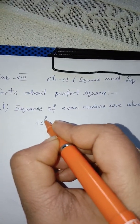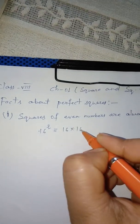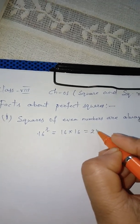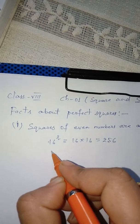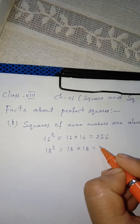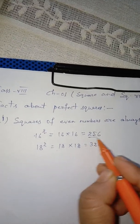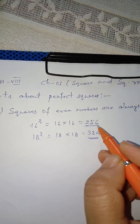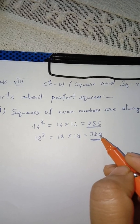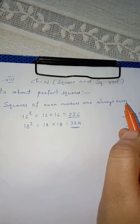Examples: 16 squared means 16 into 16, which equals 256. 18 squared means 18 into 18, which equals 324. Both 256 and 324 are even numbers. And this fact says squares of even numbers are always even.